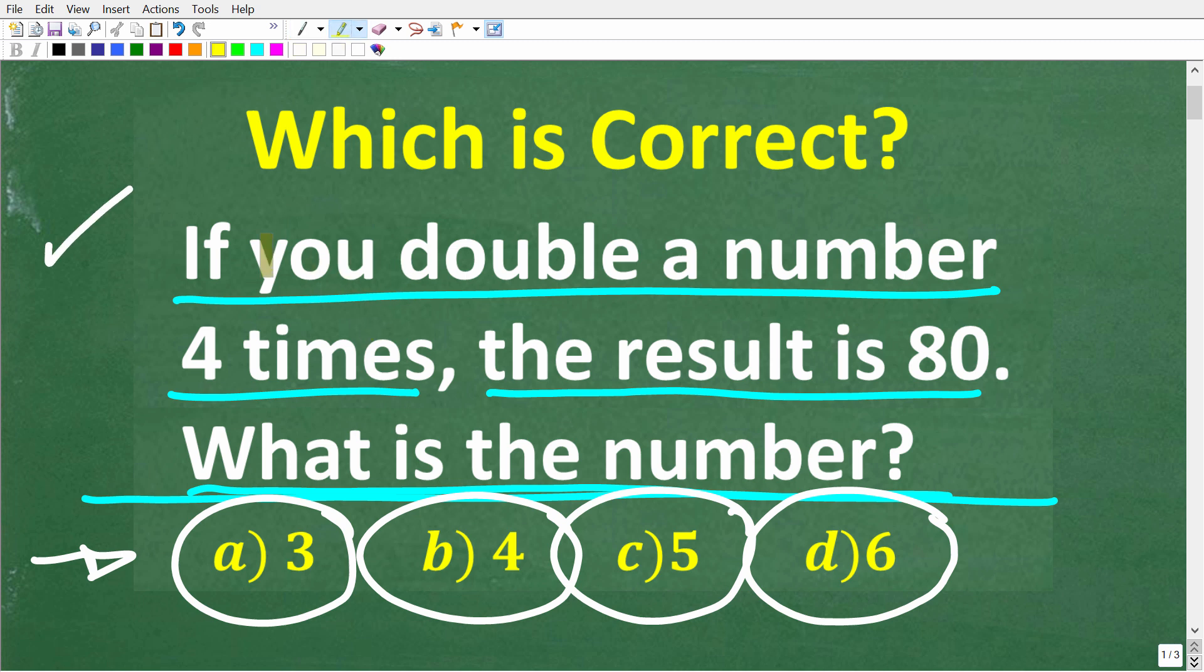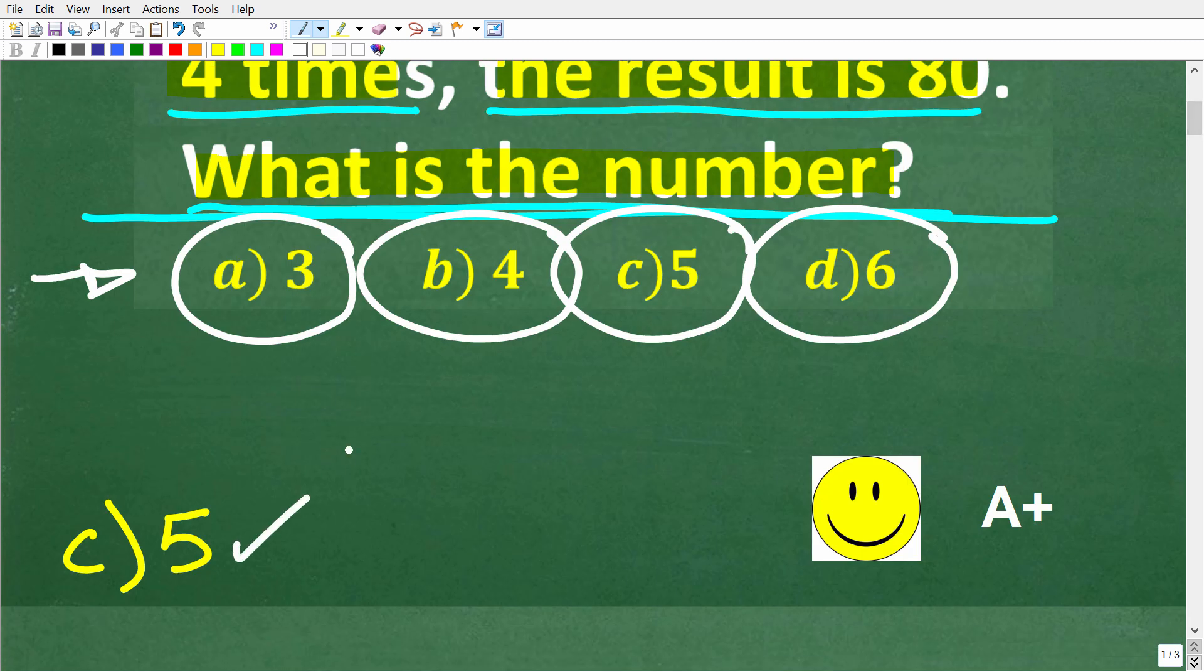Okay, so one more time, the question is, if you double a number four times, the result is 80. What is this original number? Okay, so let's go ahead and take a look at the answer. The correct answer is C, which is five.